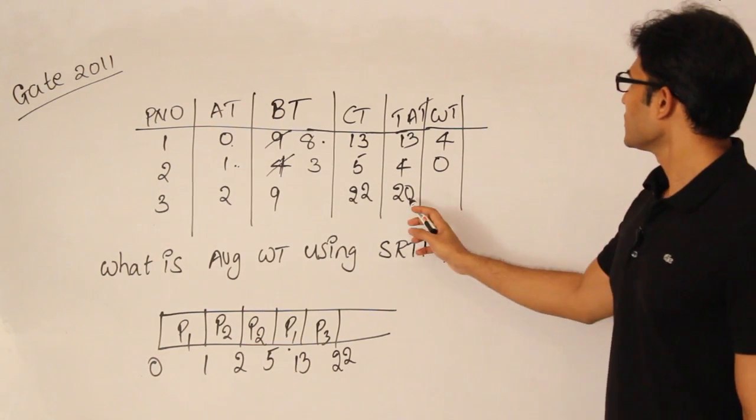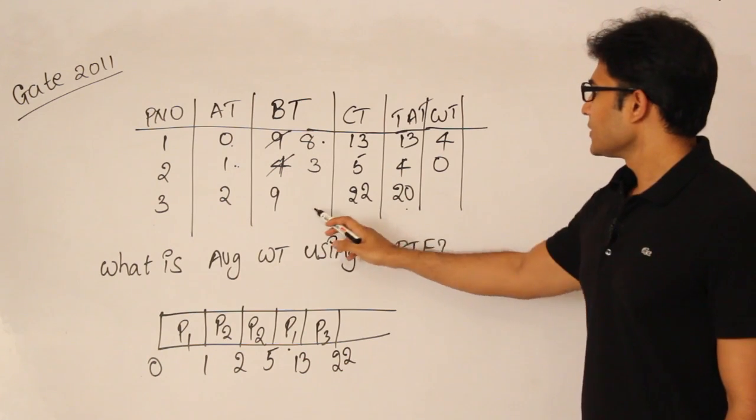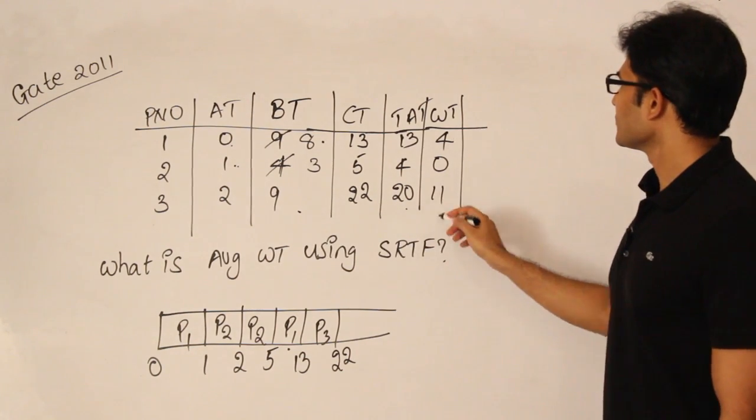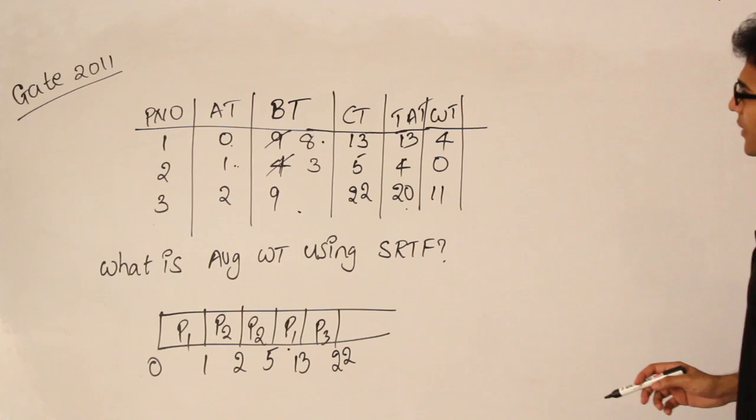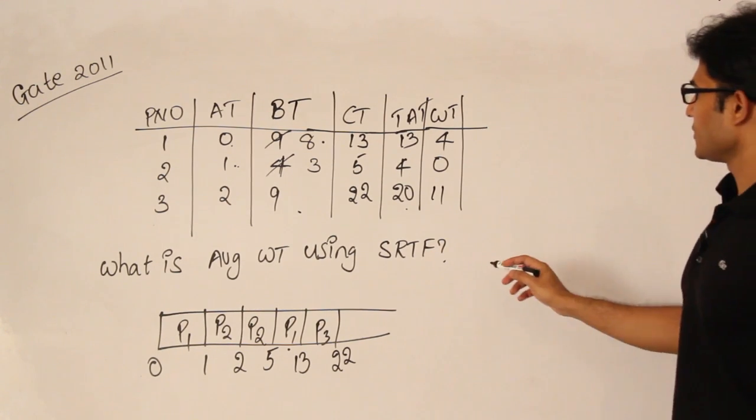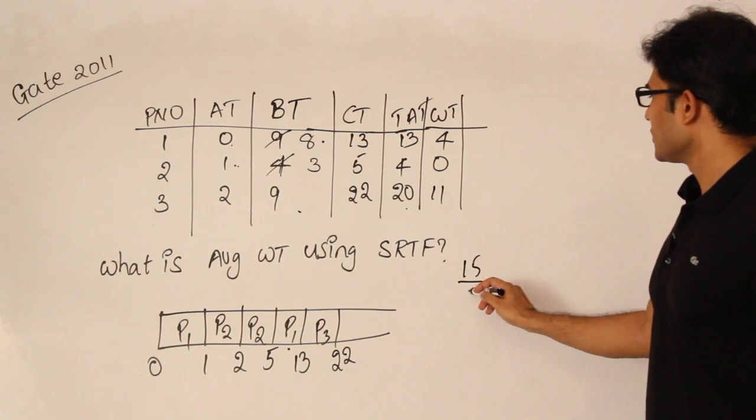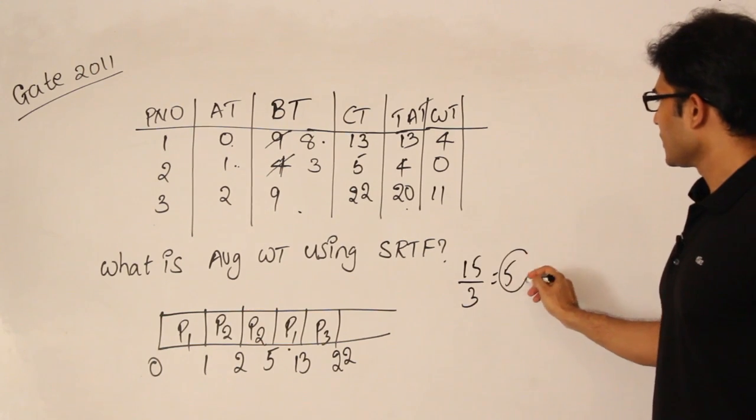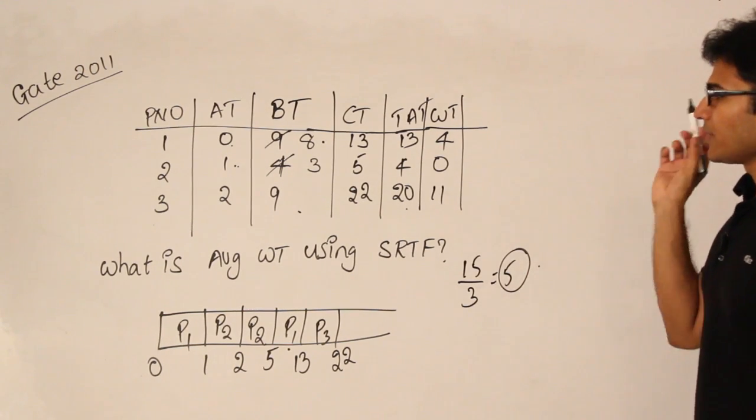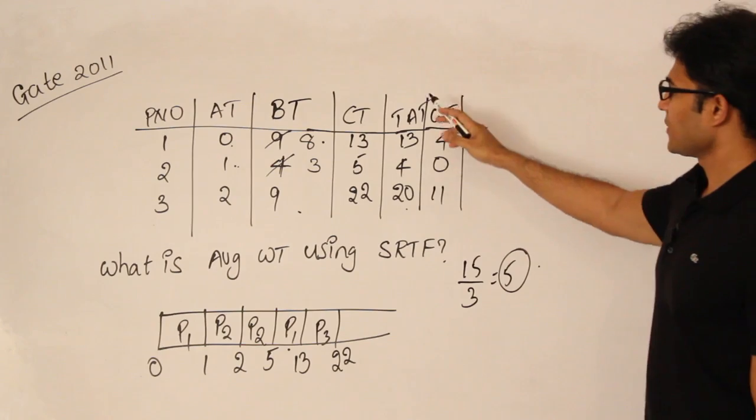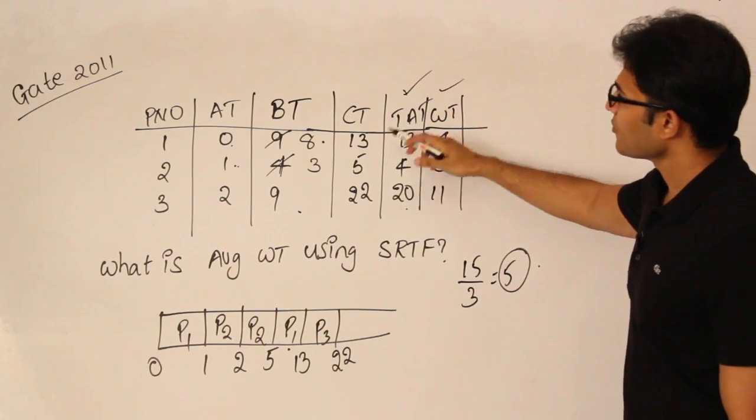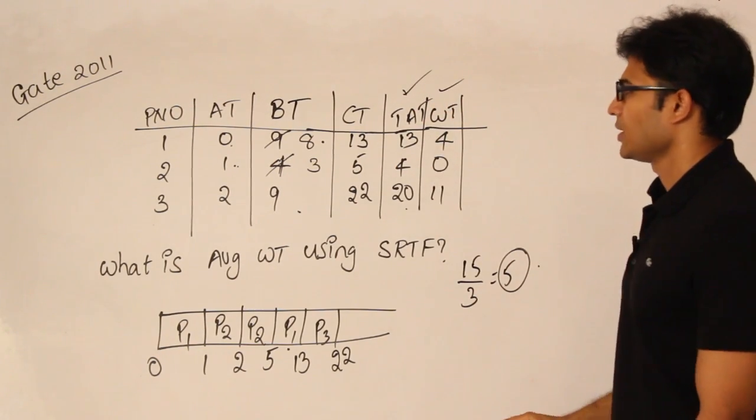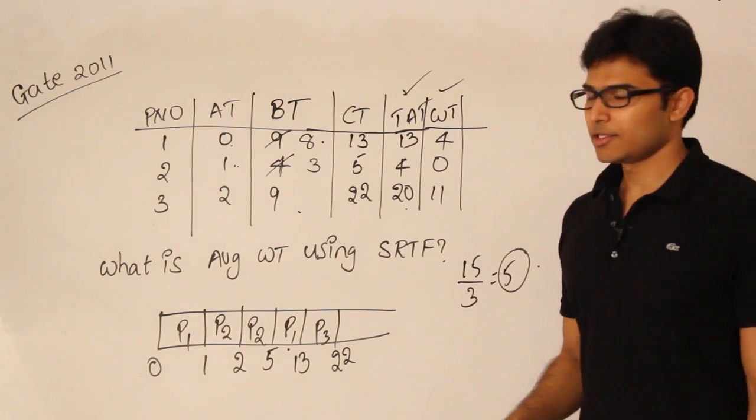Therefore, the average waiting time is 15 divided by 3, which is 5. This is the answer. They can ask the average waiting time, or sometimes average turnaround time, or they'll ask about completion time. It will be straightforward, there is nothing much about it.